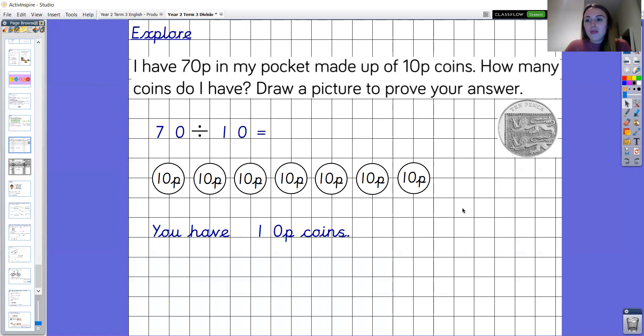So just to check that we have the whole amount let's count in our tens. 10, 20, 30, 40, 50, 60, 70. Brilliant so we definitely have the whole amount which is 70p. So let's read the division. 70 divided by 10 equals seven. Brilliant and now to answer the stem sentence you have seven 10p coins. Brilliant well done year two.